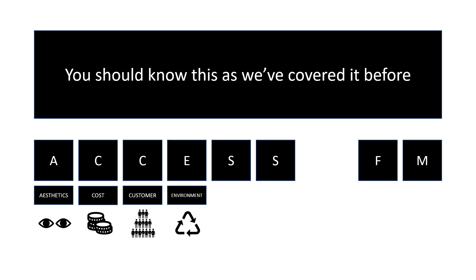The E stands for environment. You need to think about all things related to the environment. An easy way to think about that is if you look at that triangular recycling symbol — it's a continuous loop. We need to think about products from when you're designing them, through when they're being manufactured, when they're being delivered, when they're being stored, when they're being used, and then at the end of their life, when they're being recycled or reprocessed. Think about it as a big loop.